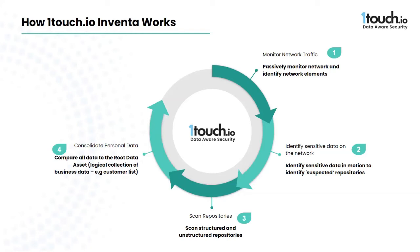This confirmed relationship and known good data enables Inventa to validate the discovered sensitive data from across the environment as real personal sensitive data with whom the company has a relationship, purpose, and some sort of regulatory or risk obligation. We call this managed PII.